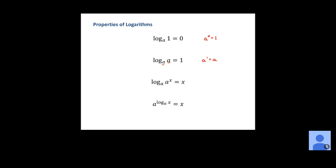The next property: we have a to the x equals a to the x. If we rewrite that in exponential form and those numbers match up, we can just take the exponent as our value for the logarithm. And finally, if you put base a here, this is the exponent you'd raise it to in order to get x. So a to the log base a of x is just equal to x.